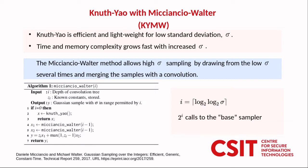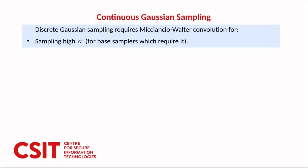It requires a base sampler which can be any sampler however the one we compare to is the Knuth-Yao with bit slicing. The Miccianchio-Walter method requires 2 to the power of i calls to the base sampler where i is the ceiling of log to the base 2 of log to the base 2 of sigma. The Miccianchio-Walter convolution addresses the issue of the explosions in time and memory complexity in the Knuth-Yao for achieving high standard deviation.